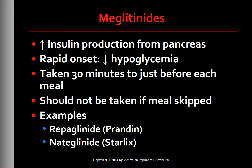The next class is meglitinides. Like the sulfonylureas, repaglinide (Prandin) and nateglinide (Starlix) increase insulin production from the pancreas. However, because they are more rapidly absorbed and eliminated than sulfonylureas, they are less likely to cause hypoglycemia. When taken just before meals, pancreatic insulin production increases during and after the meal, mimicking the normal blood glucose response to eating. Patients should take meglitinides anytime from 30 minutes before each meal right up to the time of the meal, and these drugs should not be taken if a meal is skipped.